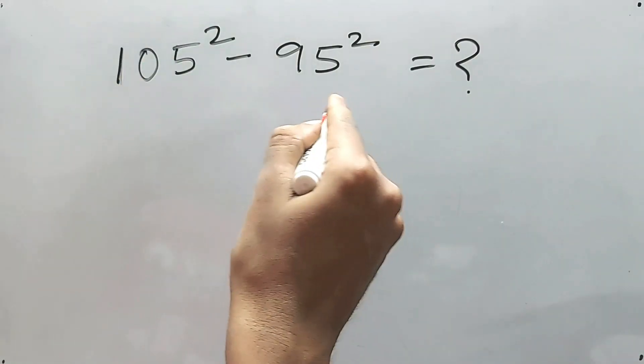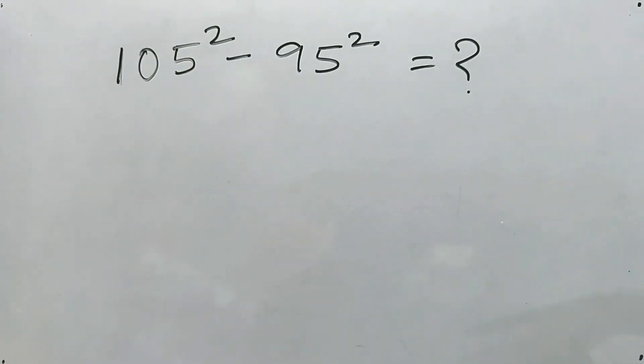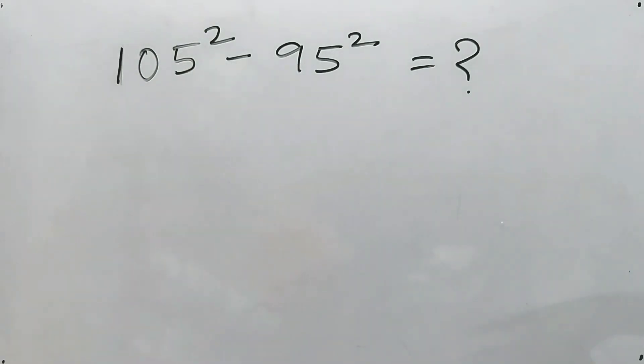So 105 square minus 95 square is equal to what? We'll have to find the value of this, right? It's simple, my friend.